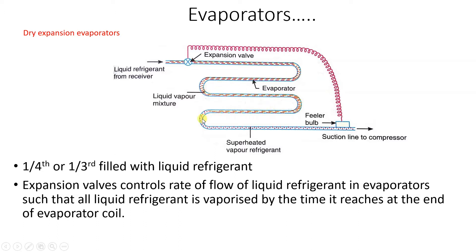In the diagram of the dry expansion type evaporator, evaporator coils are shown. At the beginning, liquid refrigerant comes from the condenser, then through the receiver to the expansion valve. After expansion, the pressure and temperature of the refrigerant decrease and it enters the evaporator. The expansion valve takes feedback from the outlet of the evaporator, controlling the flow rate of refrigerant entering it. If load is less, less refrigerant is sent; if load is more, the filler bulb gives feedback to the expansion valve and more refrigerant is sent.